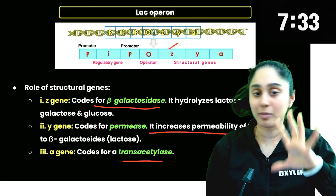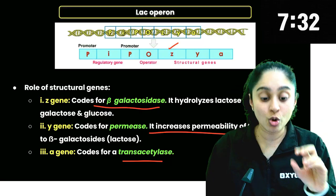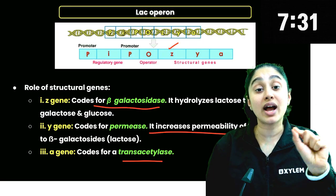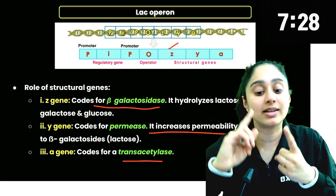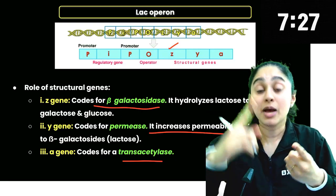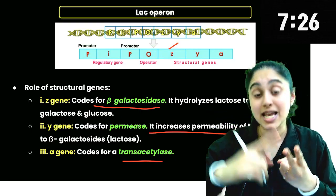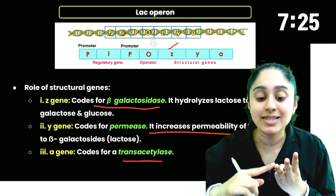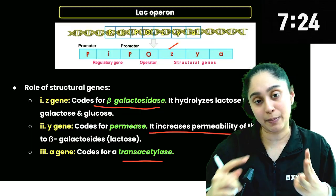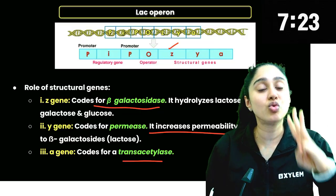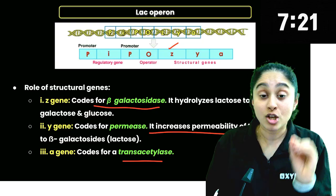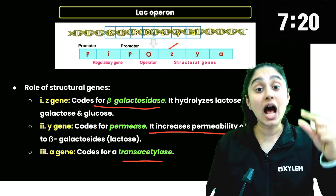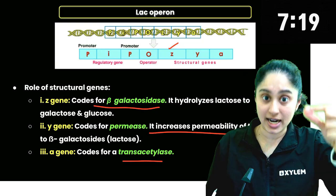So ZYA — there are three genes: beta-galactosidase, permease, and transacetylase. There are three enzyme codes. So transcription is produced from these three structural genes.